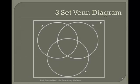Here we have our basic setup of a three-set Venn diagram. We have this square that represents our universe — that's everything we're going to be talking about inside this square. Then we've got our three circles: A, B, and C.